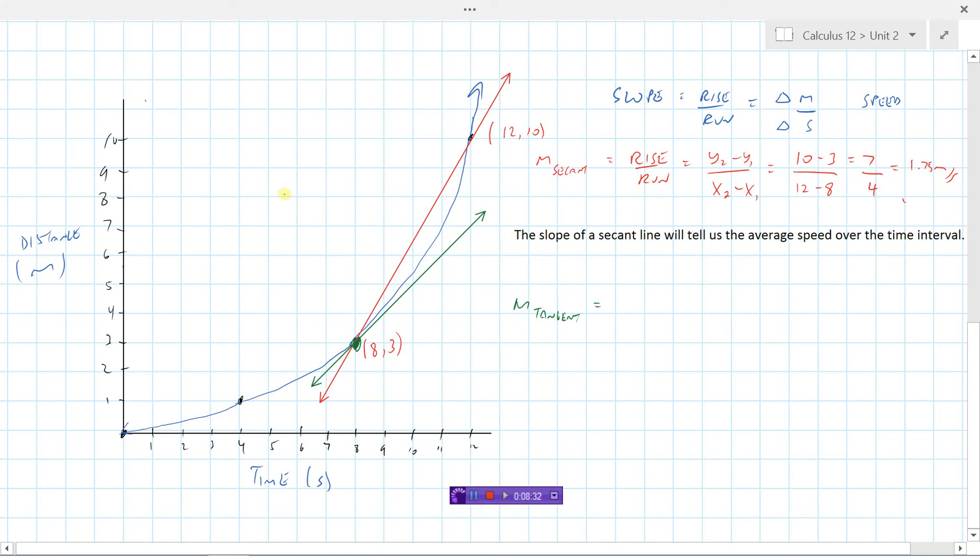But here's what we can tell: the slope of the tangent line is the exact speed at that point. Sometimes we call that the instantaneous velocity. If we happened to know the slope of the tangent line, then we would know at eight seconds exactly what the speed was at that point. We're going to spend a lot of time in this course dealing with this slope of the tangent line because that's what we eventually will call the derivative.